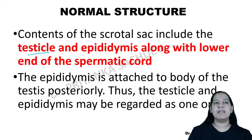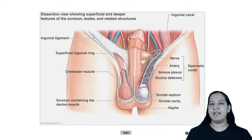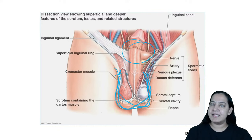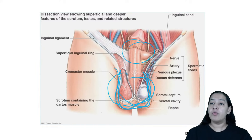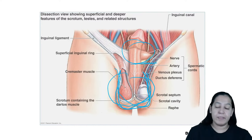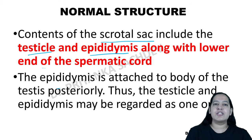The testis, along with the epididymis, is present in a sac known as the scrotal sac, which lies outside the body. It is not present in the pelvic or abdominal cavity because sperm formation requires a temperature two degrees lower than the core body temperature. That is why the testis is placed outside the body in the scrotal sac.